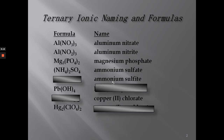Here we have ammonium sulfite. The oxygens on an -ite ending is one less than an -ate, but the oxidation number doesn't change. One ammonium is plus one, so I need two ammoniums for every one sulfite. Sulfite is SO₃²⁻.